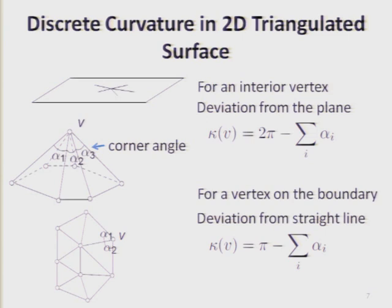I take a vertex in this triangulated mesh and look at all the triangles attached to this vertex. Each triangle has a corner angle. I sum up all the corner angles and take the difference from 2π — this is called the discrete curvature of this vertex. If the summation of the corner angles equals 2π, that means locally this vertex is flat, and it has a curvature of zero. For a vertex on the boundary of the mesh, I define curvature as π minus the summation. If the curvature is zero at this boundary vertex, it is a straight boundary.